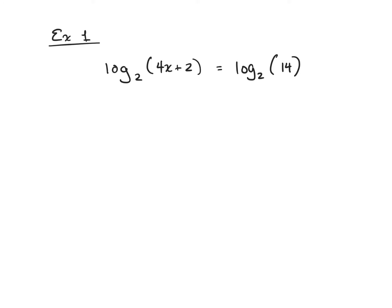Example one goes off of rule one. The first thing we note is that we have two logarithms with the same base. So if we call one side M and the other N, then M must equal N. In this problem we can now claim that 4x + 2 must equal 14. Subtracting 2 from both sides gives 4x = 12, therefore x = 3.